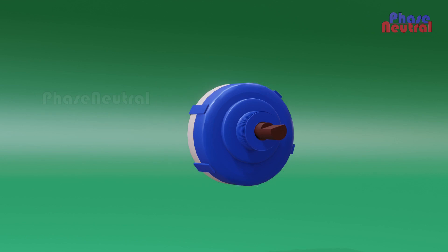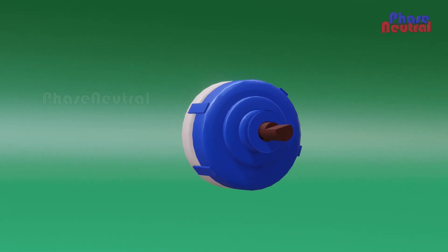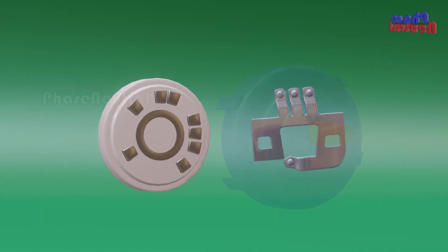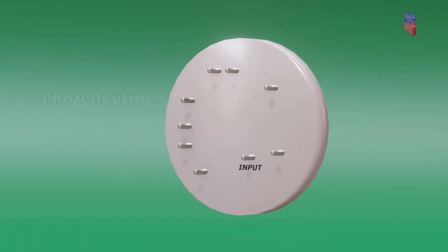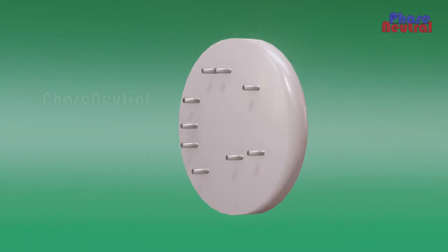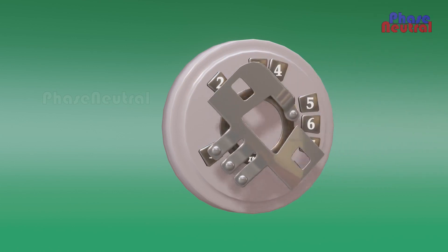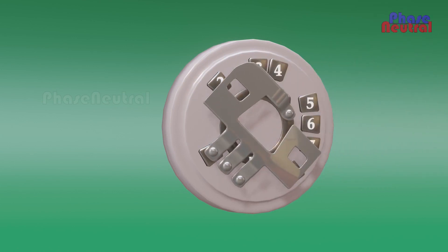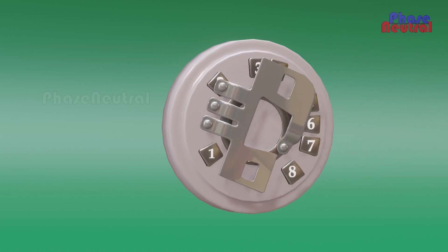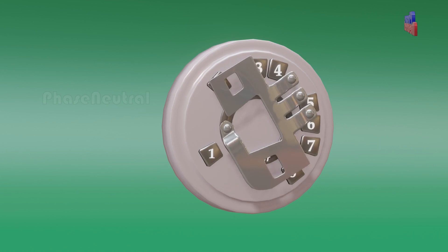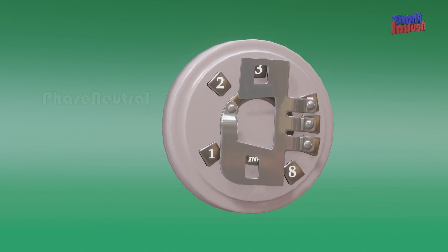This rotary switch works a little differently from the one in the electric fan regulator. It has one input terminal and eight output terminals. When you move the knob to the first position, it connects to terminal 1; second position connects to terminal 2; third position connects to terminals 3 and 4; fourth position connects to terminals 5, 6, and 7.